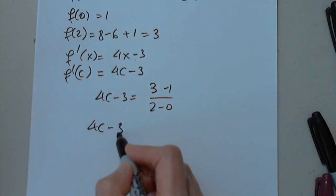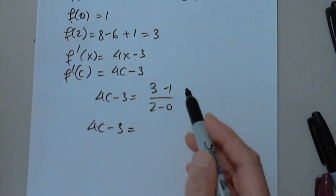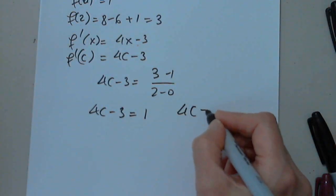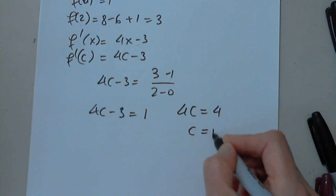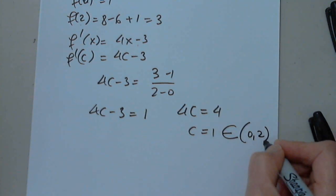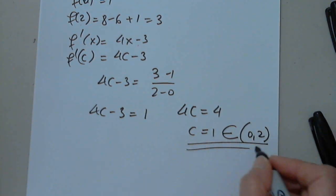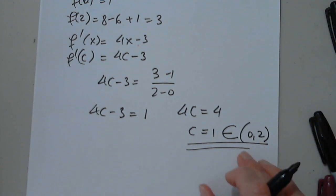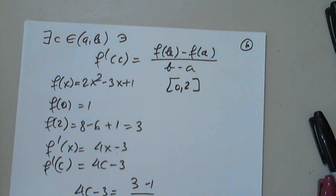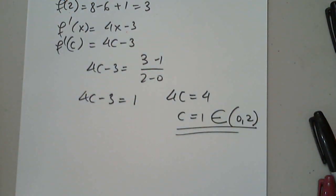So 4c minus 3 equals 3 minus 1 is 2, 2 over 2 is 1, 4c equals 4, so c equals 1. I have to show that this is in the interval 0, 2. If I don't show this, it means that I didn't check, but I did check. 1 is in the interval 0, 2. And it's guaranteed by the mean value theorem.